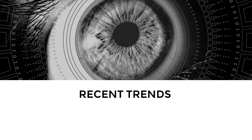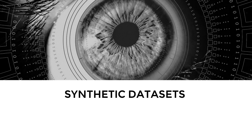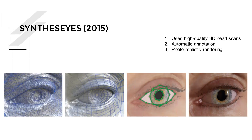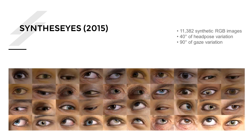Now let's look at recent trends in gaze estimation. The biggest is the use of synthetic data. In 2015, the dataset SynthesEyes was released, using high-quality 3D scans to create photorealistic renderings of the eye region with automatic annotation. This allows work at scale — you can render unlimited synthetic data as long as the modeling is correct. The dataset consists of 11,382 synthetic RGB images with large variations in head pose, gaze direction, lighting, eye shape, and eye color.